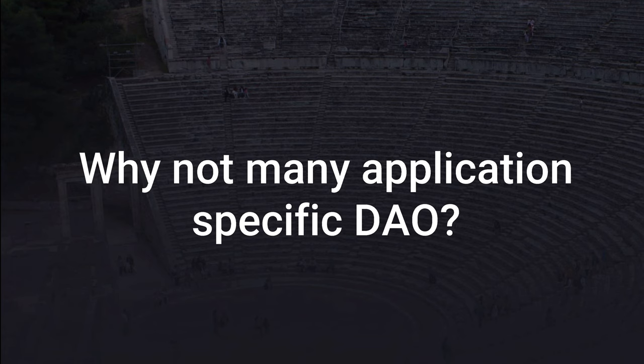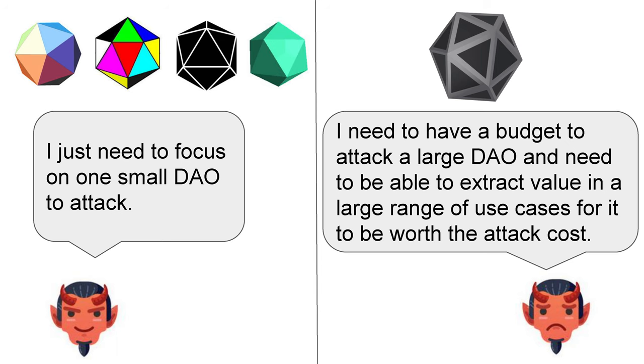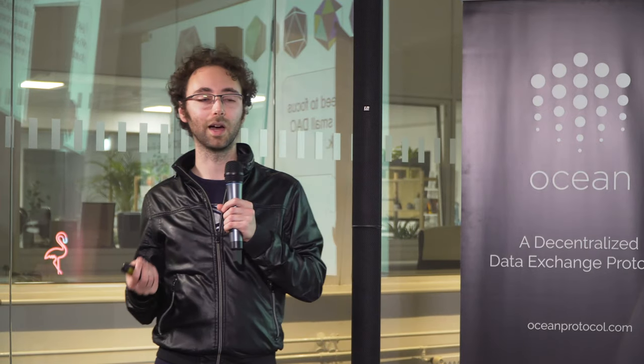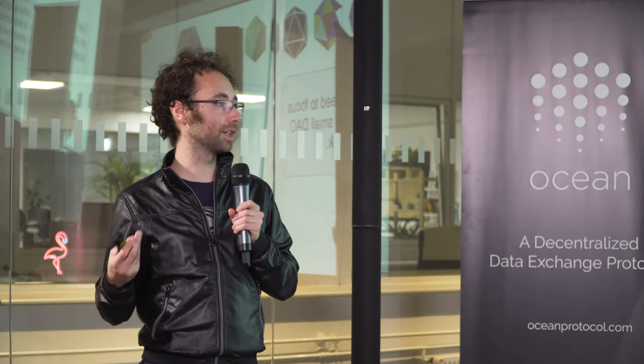On the other side, why not have many tokens — one per application, like one for Doge-on-Trial, one for a token curated list, one for an escrow? Because smaller DAOs are easier to attack than larger ones. You can see that small chains are more easily attacked in proof-of-work. Small systems are easier to attack, so it's good to have a large system to make the attack budget higher.